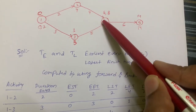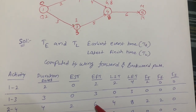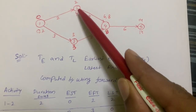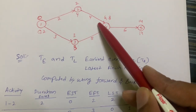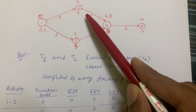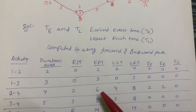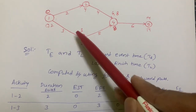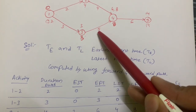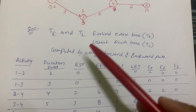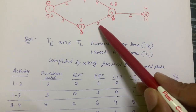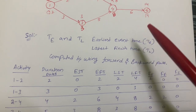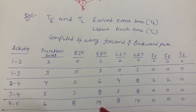For activity 2-to-4, before completing it we must complete activity 1-to-2, which is the preceding activity. So we add 2 + 4 = 6 days. For activity 3-to-4, we add 3 + 5 = 8 days. For activity 4-to-5, we add 3 + 5 + 6: that is 8 + 6 = 14 days. So the earliest finish time for 4-to-5 is 14.